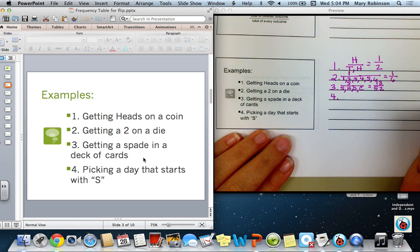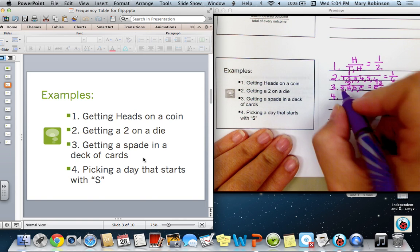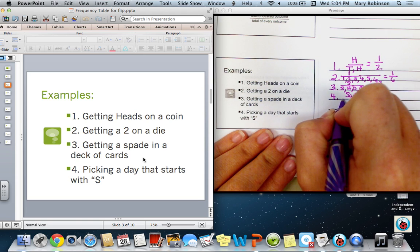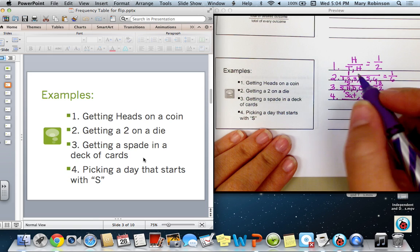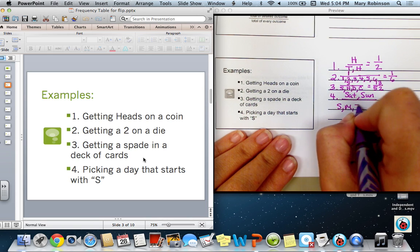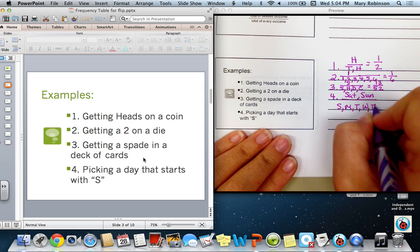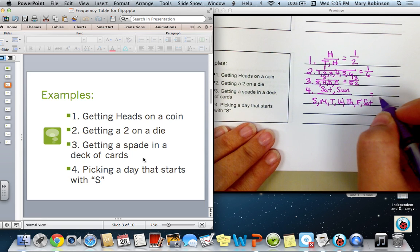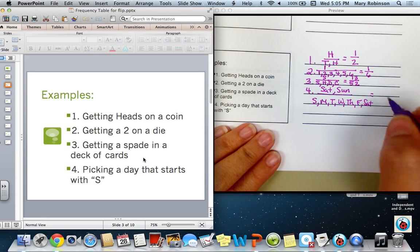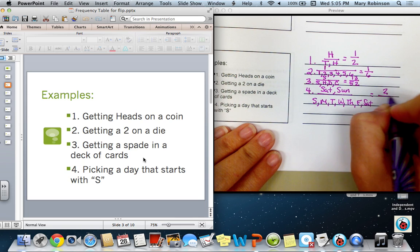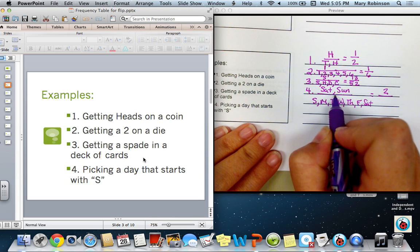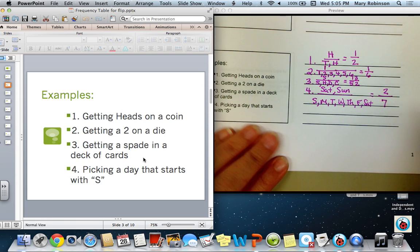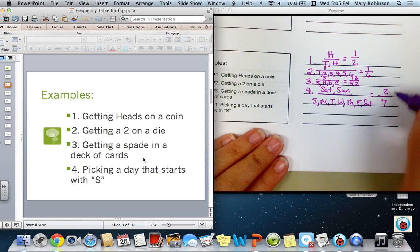For number four, picking a day that starts with the letter S, we have Saturday and Sunday out of all the possible days of the week. Sunday, Monday, Tuesday, Wednesday, Thursday, Friday, and Saturday. So the probability of picking a day that starts with an S would be two, because there are two desired outcomes, Saturday and Sunday both begin with S, out of seven possible outcomes, seven days of the week. So the probability would be two out of seven.